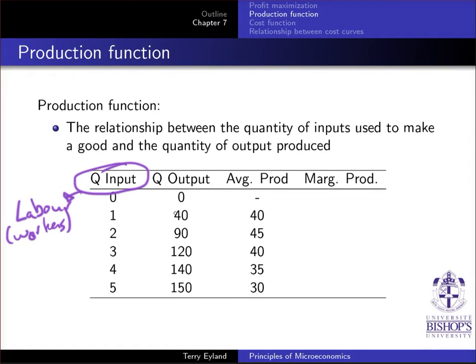But essentially average product is simply dividing the total production of output divided by the amount of workers. In this case here, I divide 40 by 1, I get 40. 90 by 2, I get 45. 120 by 3, 40. 140 by 4, 35, and so on.